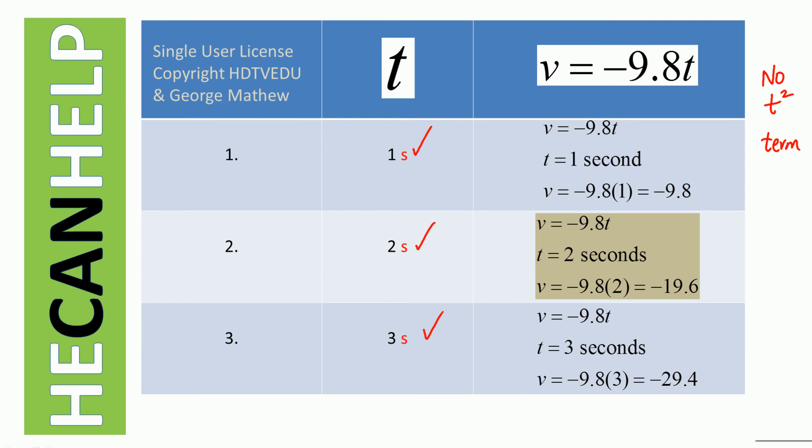Because of that reason, you will see that the graph is a straight line. So v equals negative 9.8t. Substitute t equals one second and we get negative 9.8. Substitute t equals two seconds, negative 19.6. Substitute t equals three seconds, negative 29.4.